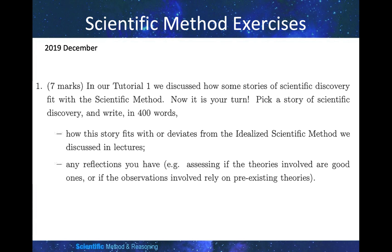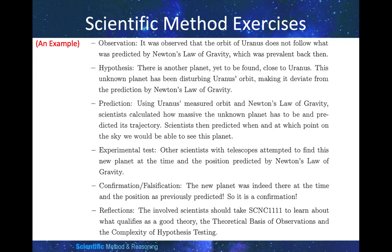December 2019. In our first tutorial, we discussed some stories of scientific discovery and how they fit with the scientific method. Now it is your turn. Pick a story of scientific discovery and write in 400 words how this story fits with or deviates from the idealized scientific method discussed in the lectures, and include any reflections you have. One example can be the stories that you learned in the first tutorial, but of course there are many other examples which fit the idealized scientific method.